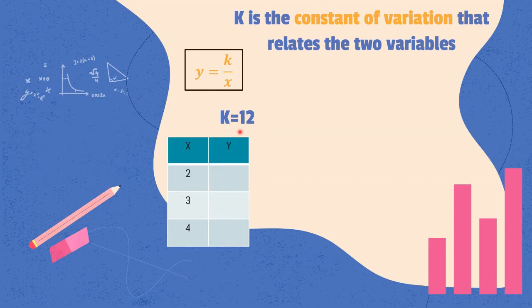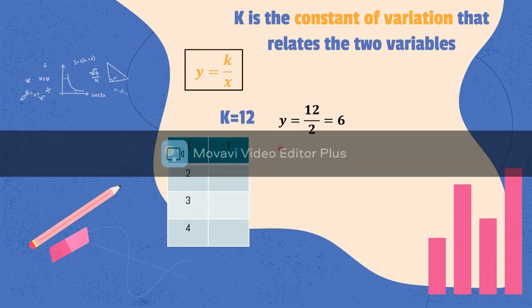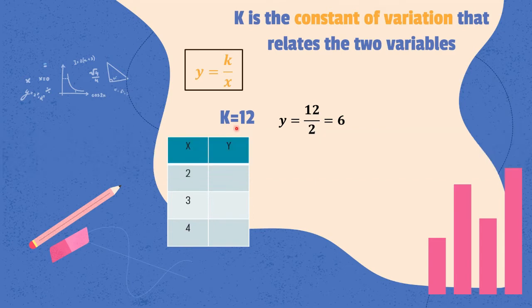So, using this equation, we'll use substitution. The 12, we'll substitute for k. And the first x value of 2, we'll substitute for the variable x. So, 12 divided by 2, we have 6. When x is 2, and the constant of variation is 12, the value of y is 6.